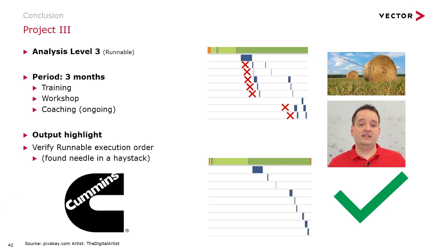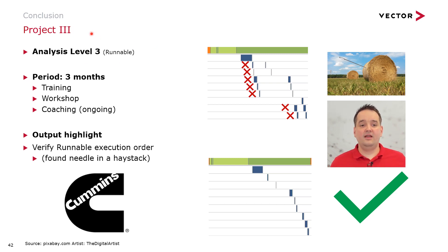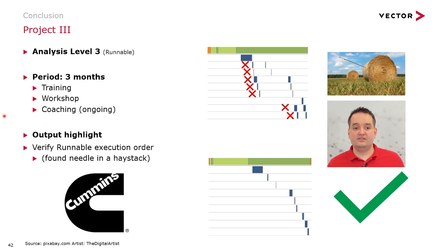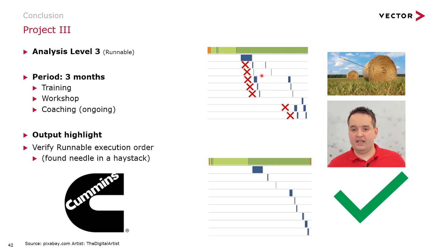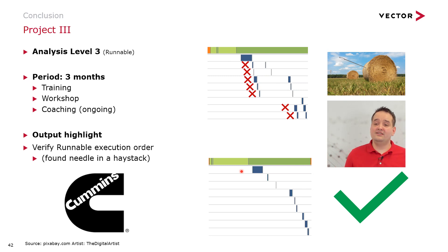The last success story was also at level 3 analysis, with a partner over 3 months, again including training, workshop, and coaching phases. We were able to verify the runnable execution order of certain software components. We observed a cascade — a double invocation — which we were able to resolve once identified. In the context of this project, this was literally finding the needle in the haystack.